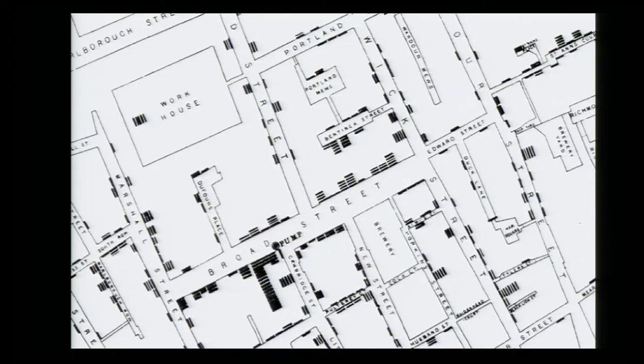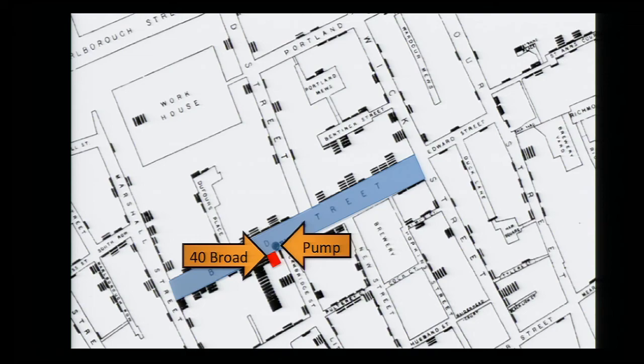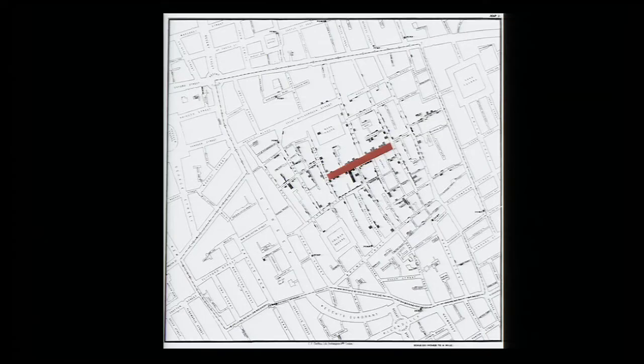Those addresses gave him very convincing evidence that the Broad Street pump was the culprit. Here's Snow's map from the book he would later publish about the outbreak. This is Broad Street; here's 40 Broad Street where the Lewis baby lived; and here's the Broad Street pump. Each death is marked with a black hash mark, and you can see the concentration of deaths on Broad Street. Here's the full map, zoomed out, with Broad Street highlighted in red.